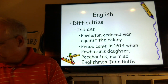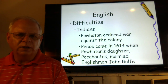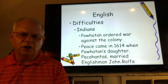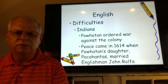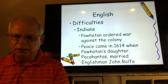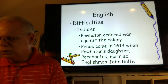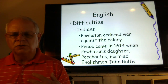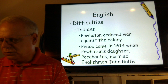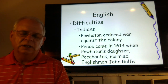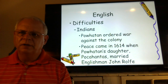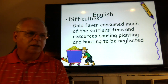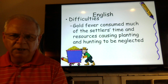Powhatan ordered war against the colony. Peace ultimately came in 1614 when his daughter Pocahontas married the Englishman John Rolfe — regardless of what Disney has said about Pocahontas and Captain John Smith. She married John Rolfe, traveled to England, and took on the mannerisms and dress of the English court. Unfortunately, she died relatively soon because many Native Americans did not have an immune system capable of protecting them from European diseases that didn't threaten European lives.